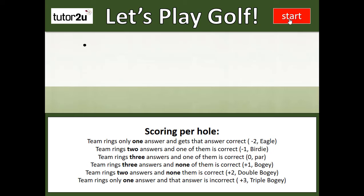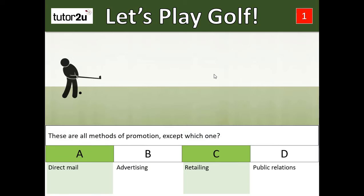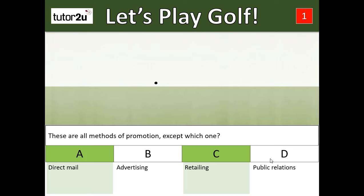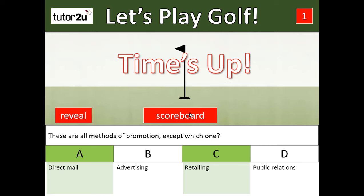Let's click on the start button and the first question arrives. Question one — there's your question, four possible answers. The students have only the time it takes for the board to travel across the screen and fall down into the hole to make their decision. They fill in their sheet, tear off their answer to question number one, and hand it to you, having ringed one, two, or three answers — A, B, and C for example.